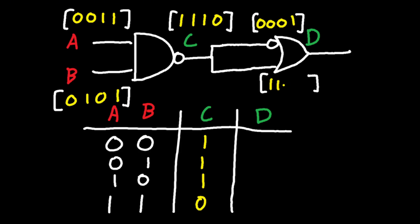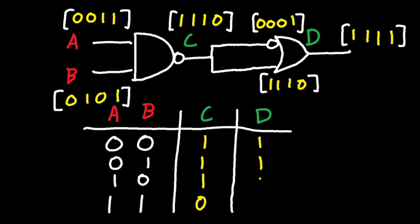So you have 1,1,1,0 going into one input of the OR gate, and 0,0,0,1 into the other. The first input into this OR gate is 0 and 1, which gives 1. The second is 0,1 again — that's 1. The third is 0,1 again — simply 1. And the last is 1,0 — which is simply 1. So what we have here is simply a circuit that turns everything into 1. Therefore, the output for D is just 1,1,1,1.